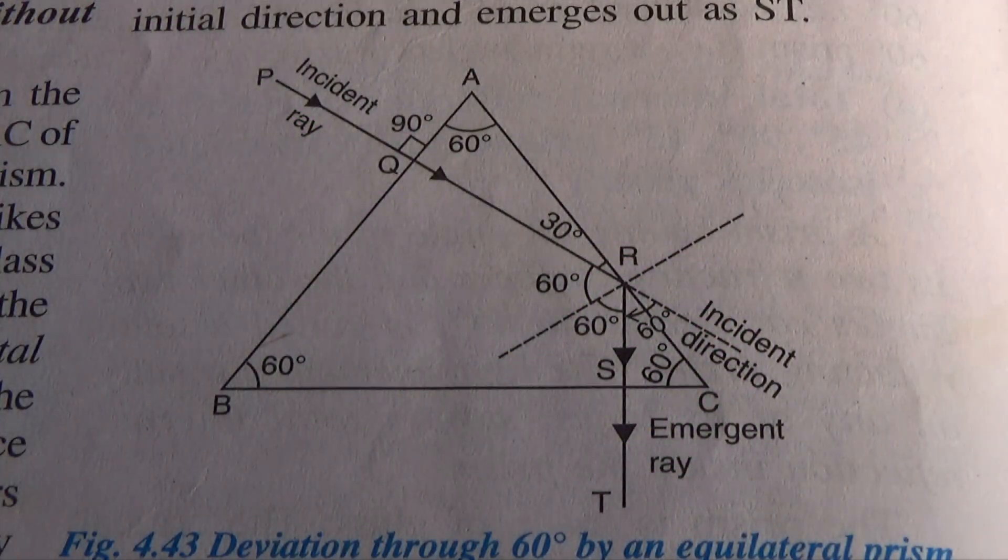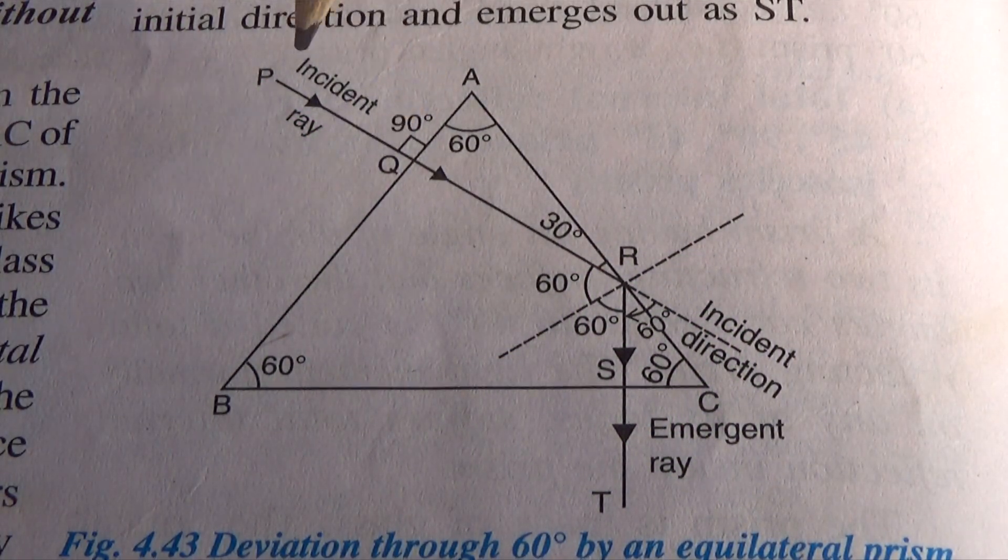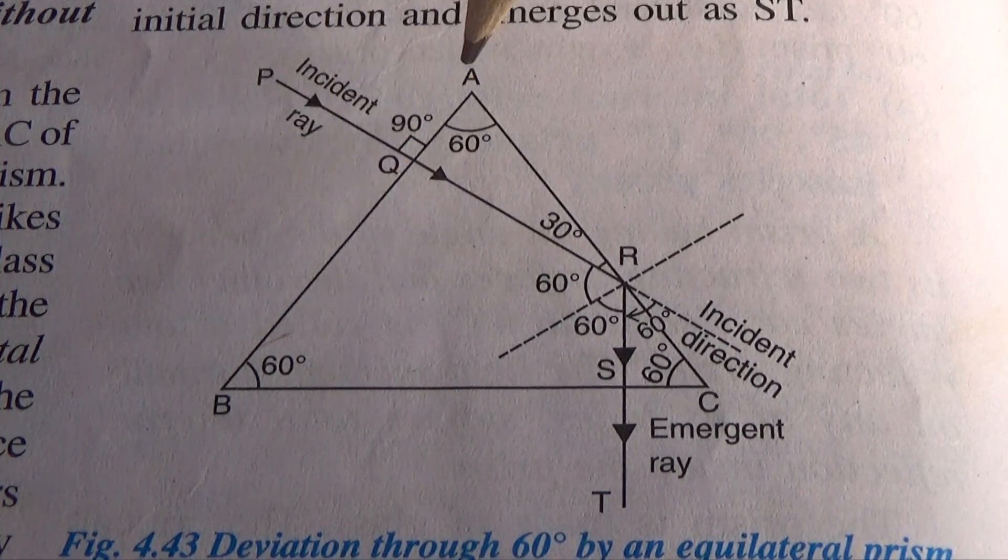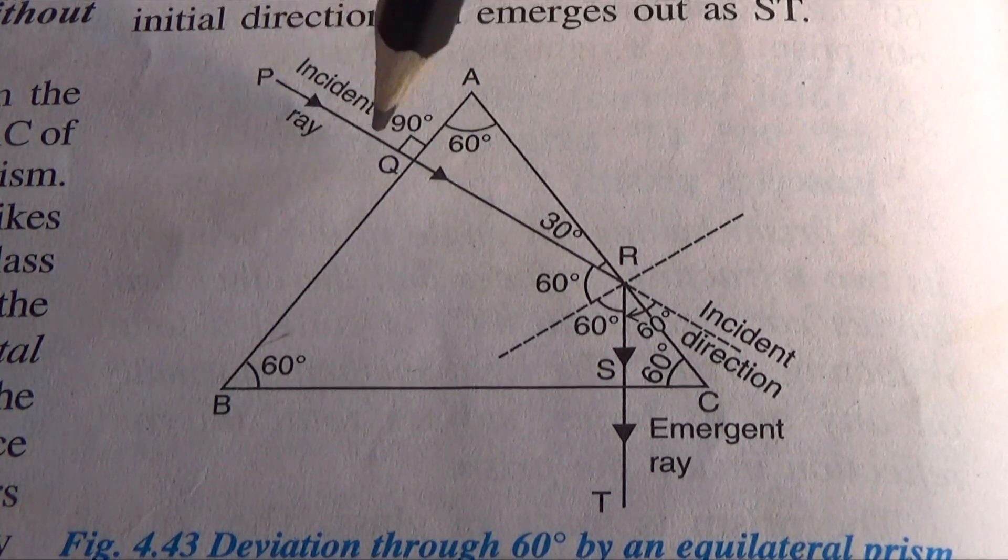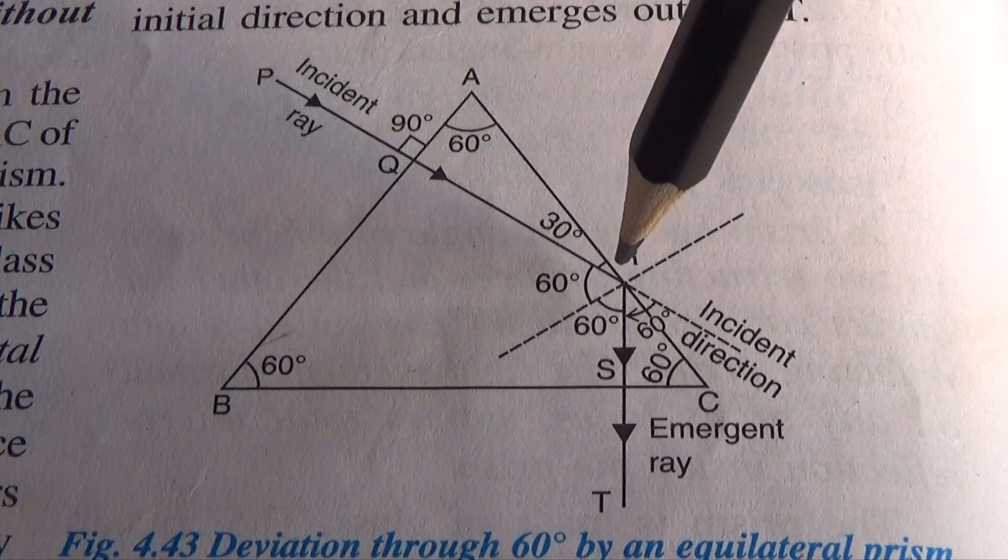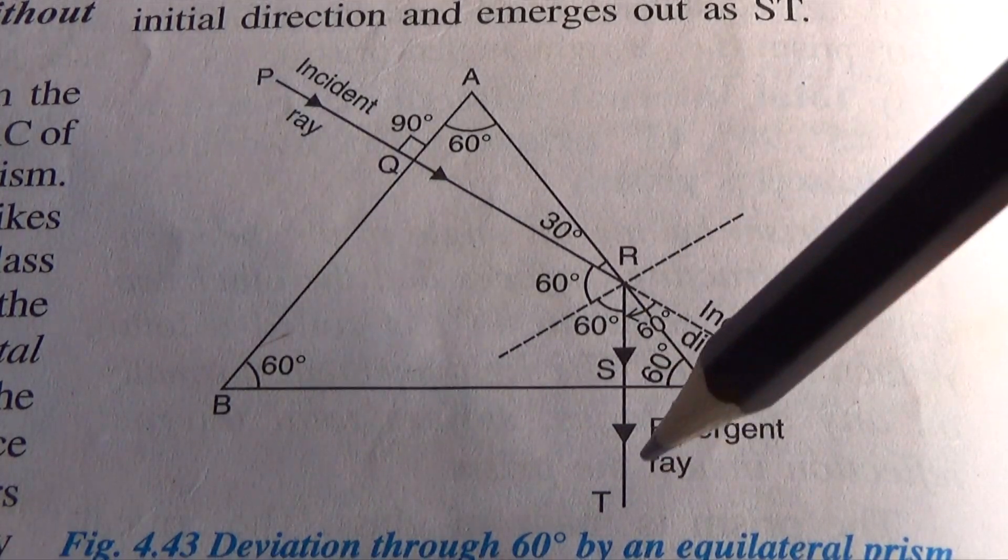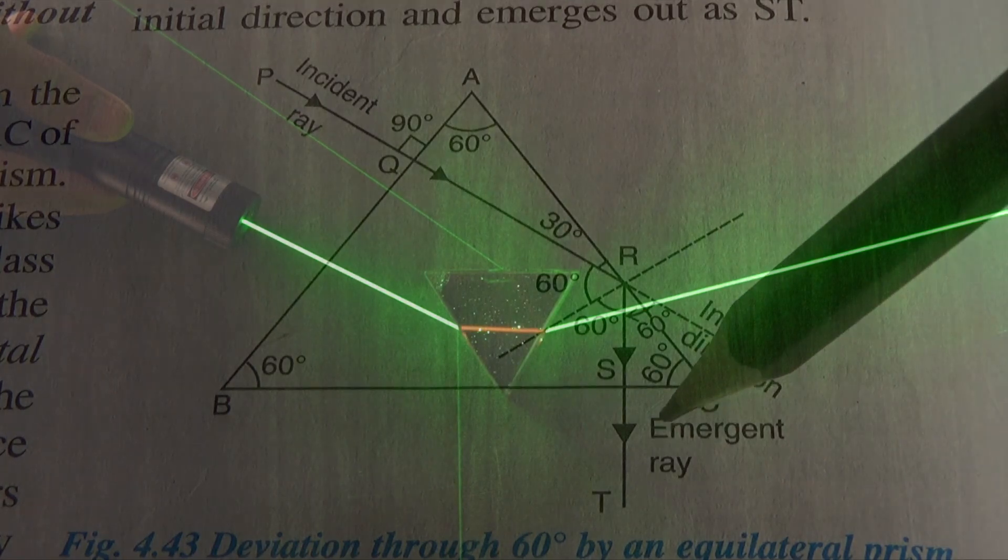But if we allow the light to fall normally or perpendicularly to the surface of the prism, then the total light ray will reflect back to the same medium. This phenomenon is called total internal reflection.